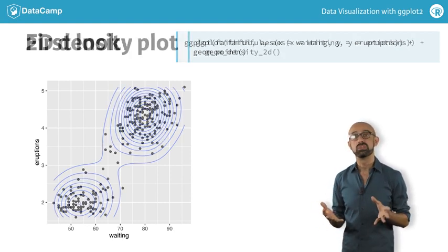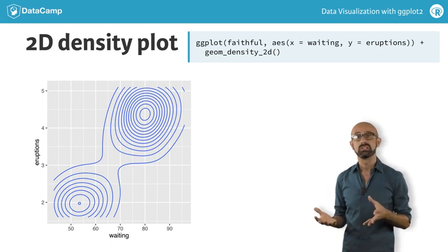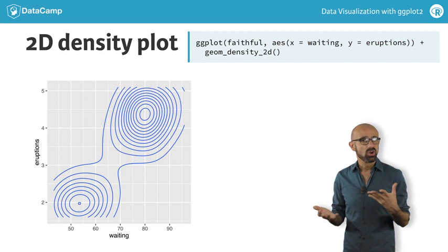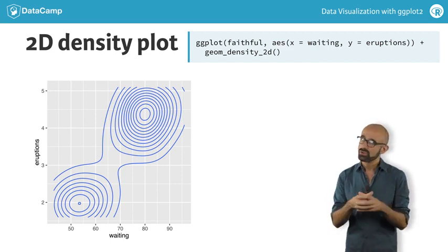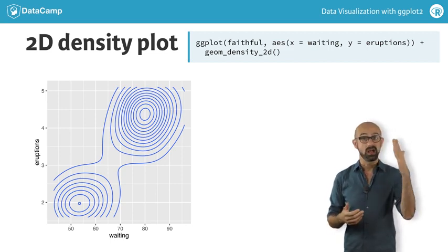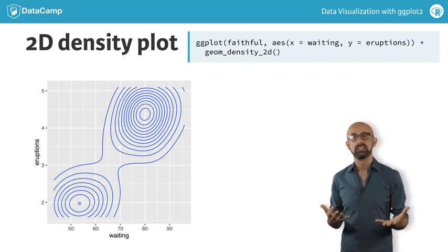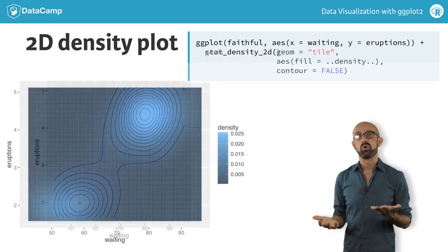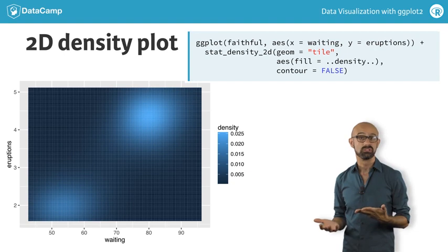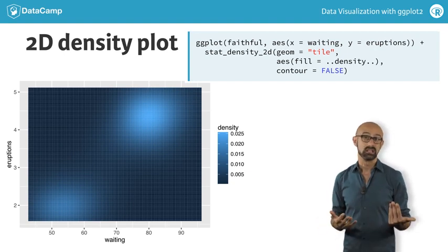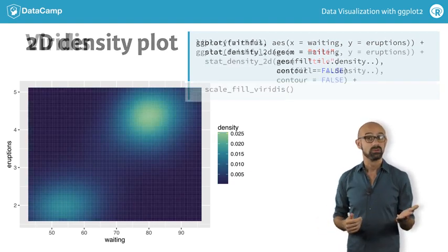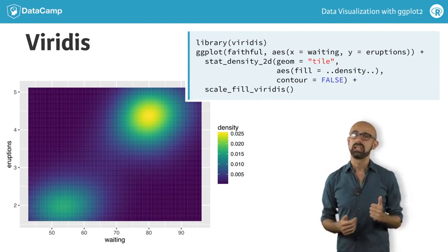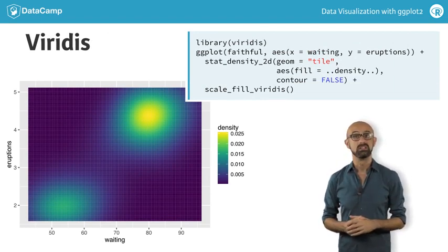For this, we can use a 2D density plot, which appears as something like a contour plot. If you've ever seen a topographical map, the concept is the same — the more concentric a ring is, the higher the density. A nice effect here is to fill in the regions according to their density. We encountered monochromatic color scales in the first two courses, which I advocated for in the case of continuous data. However, the Viridis color scale has recently gained in popularity, and we'll explore some advantages of this scale in the exercises.